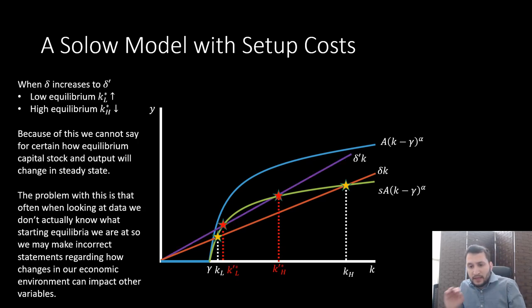Now this is where things get a little bit weird and where we really have issues with multiple equilibria generally. When we have a change in our depreciation rate delta, we see a change in both of these equilibria. For our low equilibria it actually increases but our high equilibrium decreases.